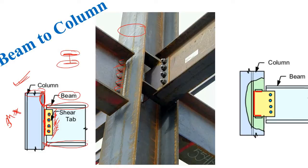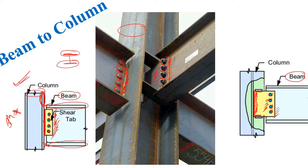The shear tab or plate is not visible on this side — you can only see the bolts — but you can see the plate has been welded to the column flange. You can also connect the beam to the web of the column: again, the web is connected using bolts to the shear tab or plate, and then the plate is welded to the web of the column.